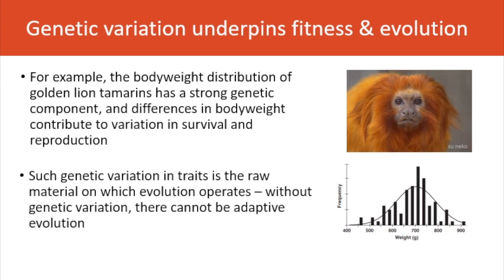Body weight is a fitness character in golden lion tamarins. Such genetic variation in traits is the raw material on which evolution operates, so without genetic variation there can be no adaptive evolution.